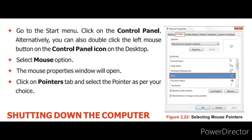Next, select mouse option. Mouse option को select करिए. Next, the mouse properties window will open. Mouse properties window open हो जाएगी. Last है — click on pointers tab and select the pointer as per your choice. Pointers tab पर click करिए और अपनी choice के अनुसार pointer को select करिए. Okay students, tomorrow we will read about setting down the computer and recall of the chapter. Goodbye.